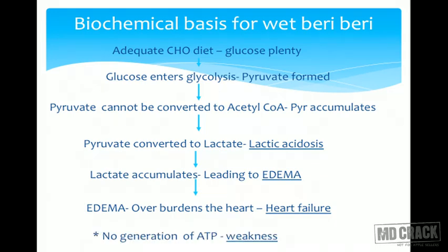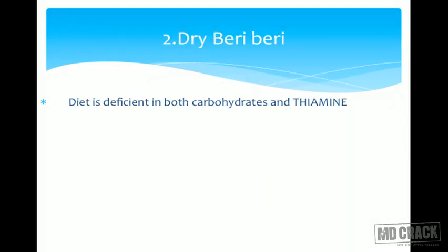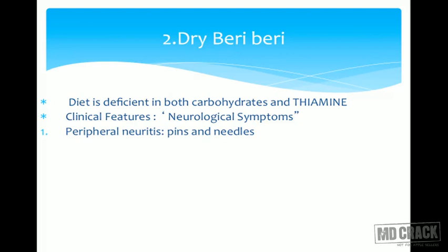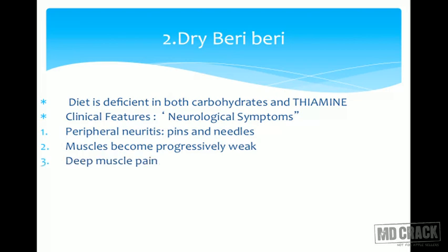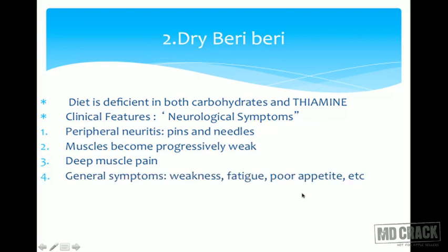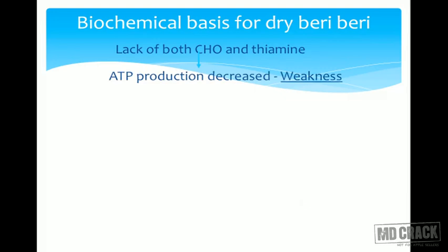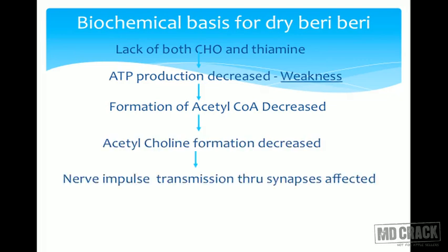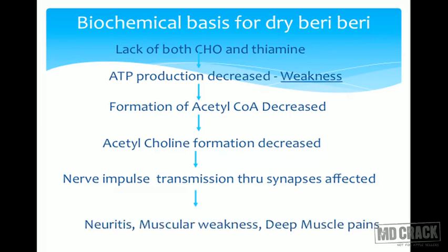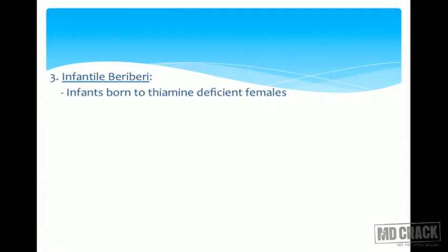Dry beriberi is seen when both carbohydrate and thiamine are deficient. Since little pyruvate is produced, there is no pyruvate accumulation. Instead, the deficiency manifests as lack of acetyl-CoA, impairing acetylcholine formation. All symptoms are neurological: peripheral neuritis with pins-and-needles sensations, progressive muscle weakness, and deep muscle pain, but no edema.